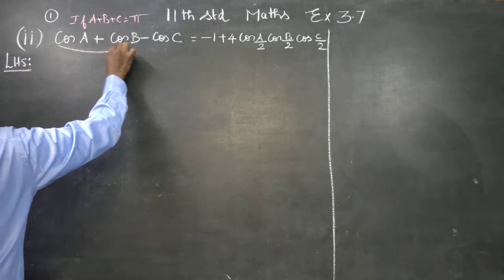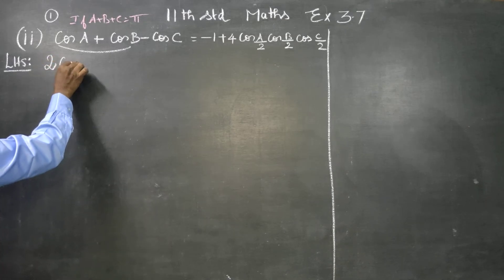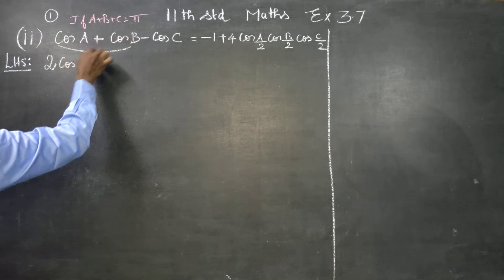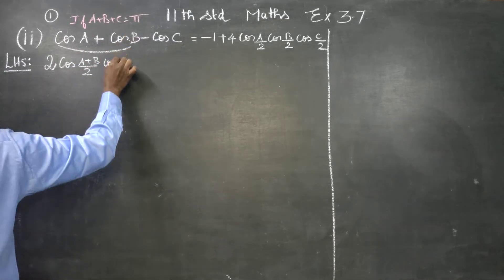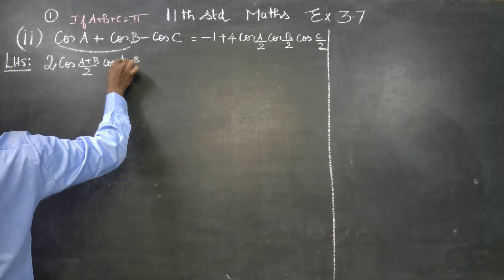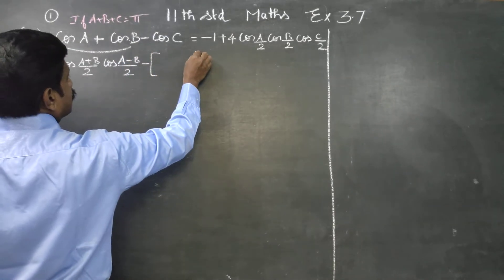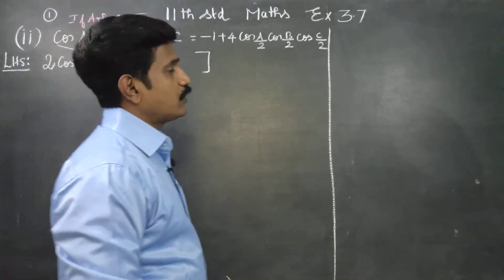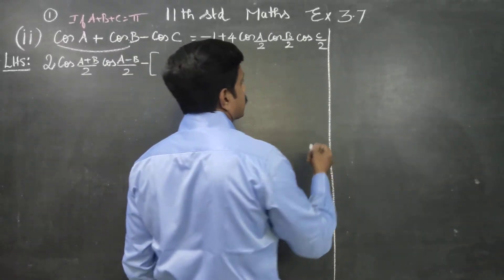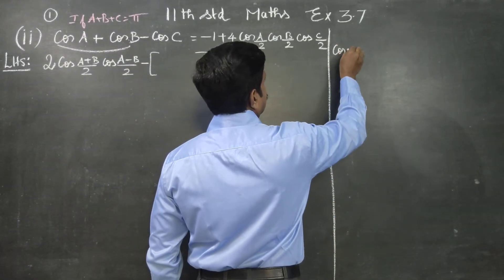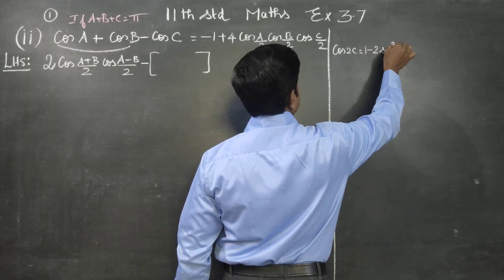I am going to use the formula cos C plus cos D. Cos C plus cos D is 2 cos((C+D)/2) cos((C-D)/2), minus cos C. I am going to use a multiple angle formula and sub-multiple angle formula. We know that cos 2C is equal to 1 minus 2 sin² C.